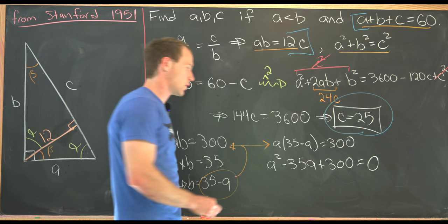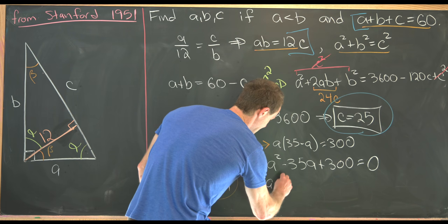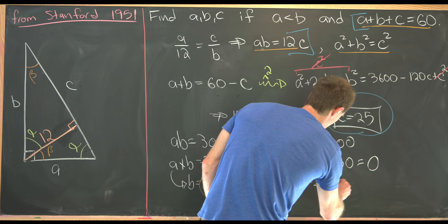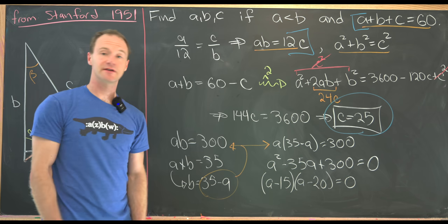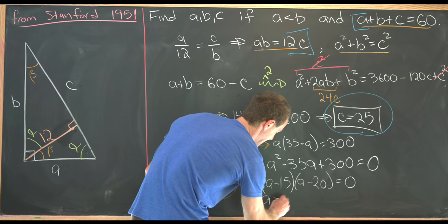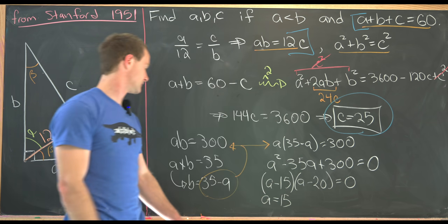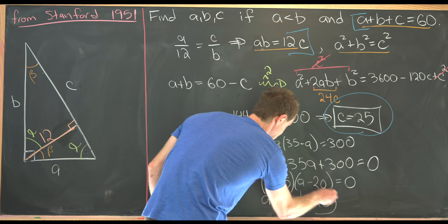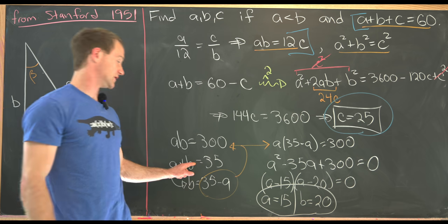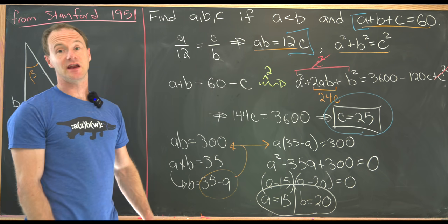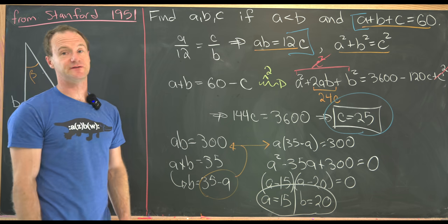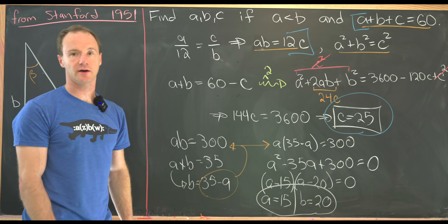So this actually factors quite nicely. This factors as A minus 15 times A minus 20 equals 0. And so that gives us two solutions. That gives us a solution when A is equal to 15, which tells us that B is equal to 20 by this equation right here. And another solution when A is equal to 20, that makes B equal to 15. But notice that doesn't satisfy this rule up here.